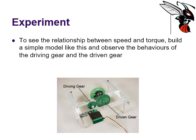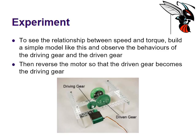And if the driving gear is the small gear and the driven gear is the big gear, you're going to see how that affects the speed and how that affects the torque. And then you'll reverse the motor so that the large gear is the driven gear and the small gear is the driving gear. And see how that affects the speed and the torque. And what you should see is that they're completely inversely proportional.